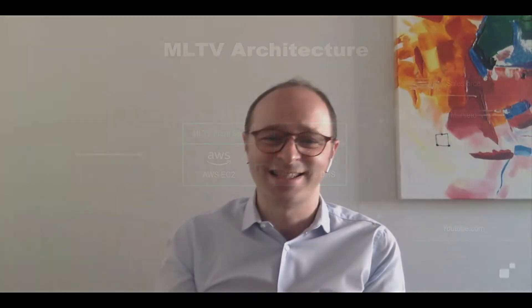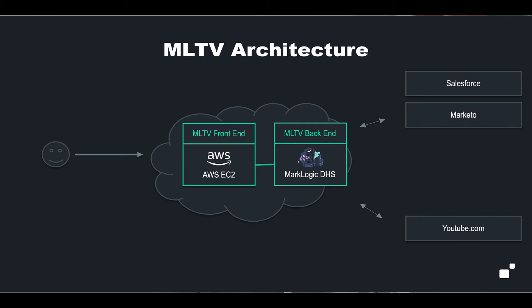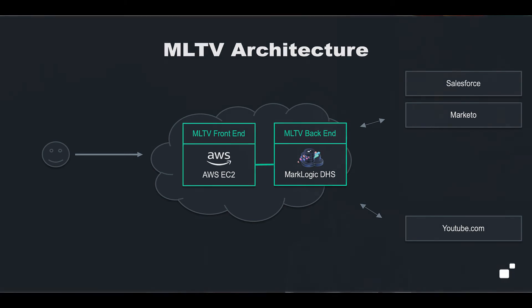Last but not least, it was also a breeze to test and deploy the application at any time and at scale, since MLTV runs on DHS — the MarkLogic Data Hub Service — our fully managed cloud data hub that runs on Amazon Web Services. Thanks to DHS, we were able to create the instances we needed in a few clicks, and instances have auto-scaling based on MLTV usage. So if more people are coming to MLTV, the service scales automatically.